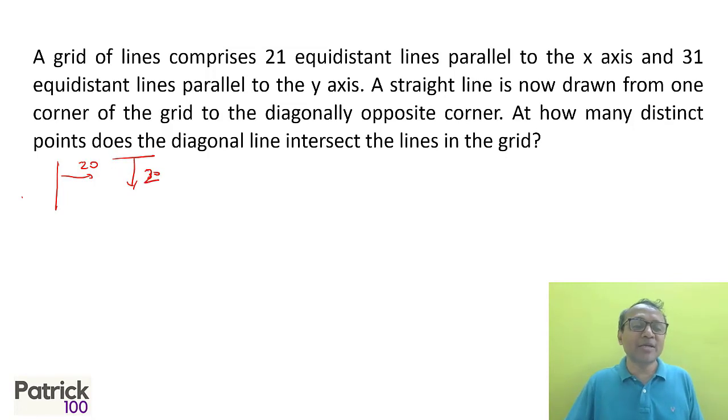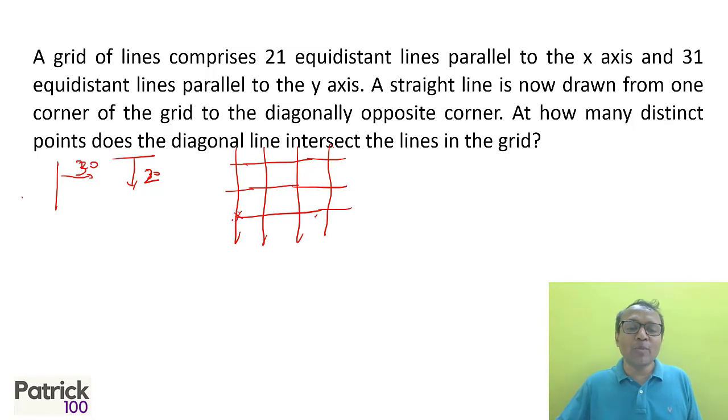So the shortest version I can take is 1 and 2 more lines, and 1 and 3 more lines - equal spacing. And I need to go from one corner to the opposite corner like this. So how many points will you meet? First point is anyway there. Then 1, 2, 3 and 4. I meet the lines at 4 points.